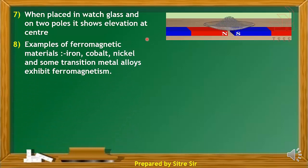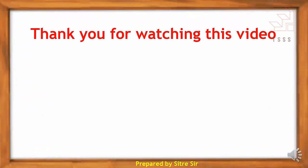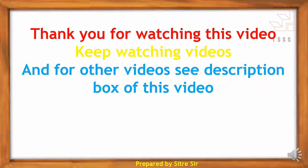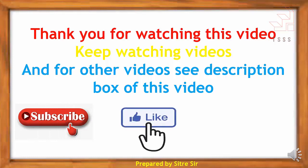Examples of ferromagnetic materials include iron, cobalt, nickel, and some transition metal alloys that exhibit ferromagnetism. Thank you for watching this video. Keep watching, see the description box for other videos, and don't forget to subscribe, like, and share.